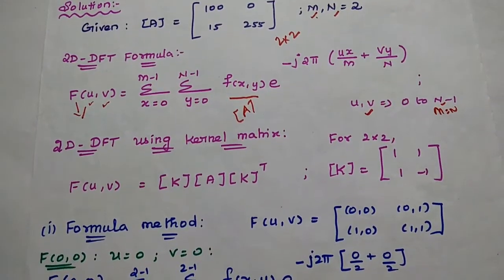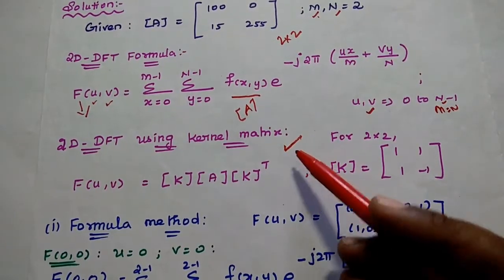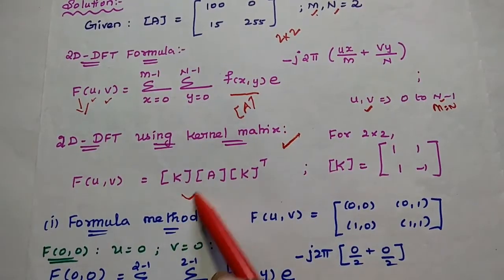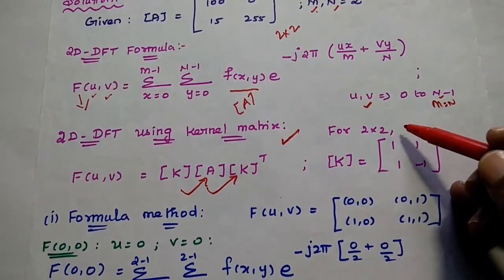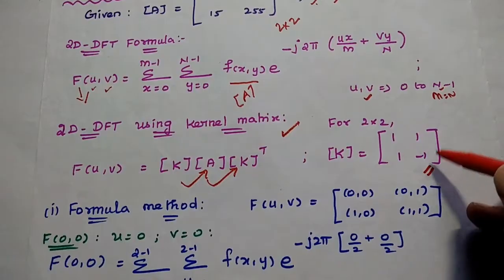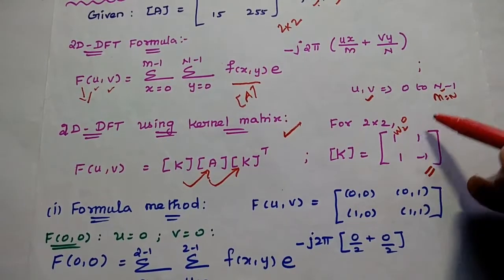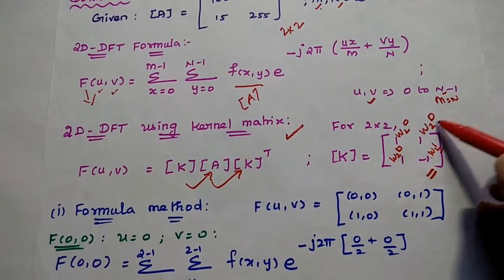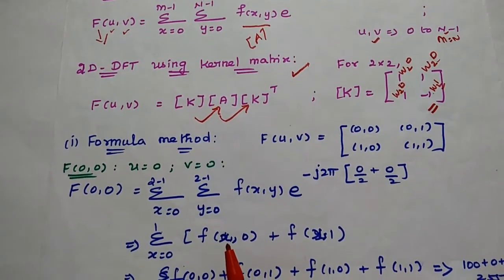The same 2D DFT can also be obtained by using the Kernel matrix method, which is the simplest method. Here we can obtain the transformed signal using matrix multiplication: Kernel matrix multiplied with the image matrix, then multiplied with the transpose of the Kernel matrix. For this 2 by 2 image matrix, the Kernel matrix value is 1, 1, 1, minus 1. This Kernel matrix for DFT can be obtained using the Twiddle factor. First, we are going to solve this problem using the formula method.